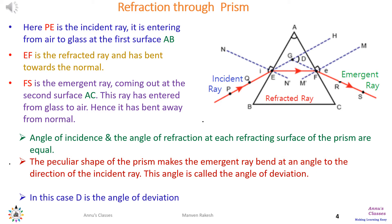EF is the refracted ray and has bent towards the normal, so it is now looking parallel to the base of the prism. FS is the ray which is coming out of the prism, so it refracts again and this is called the emergent ray.